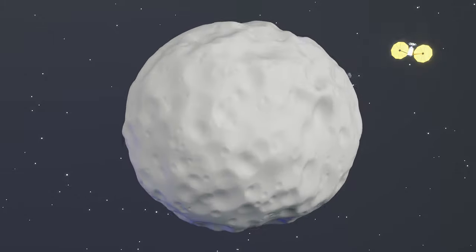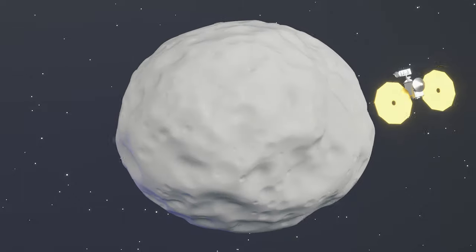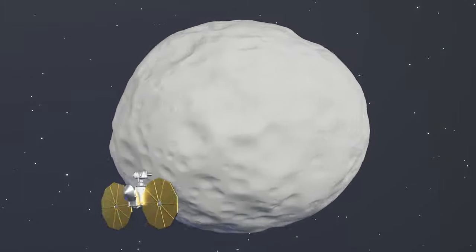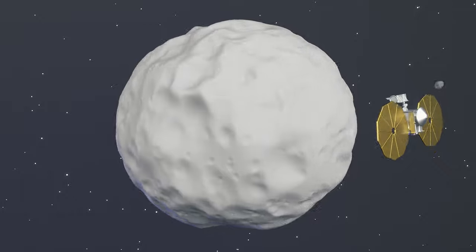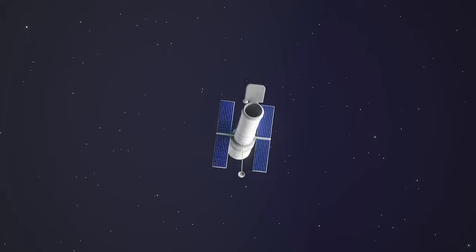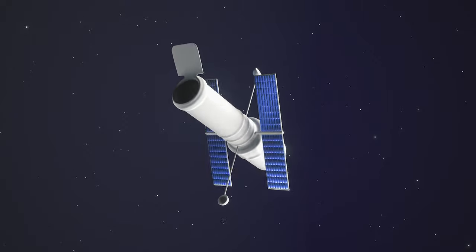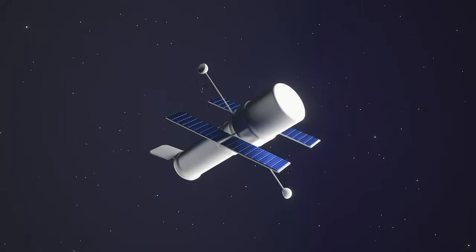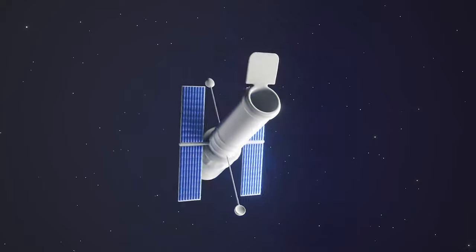Finding these tiny new worlds before Lucy is launched in 2021 means that the team can investigate their orbits and plan for more detailed follow-up observations during flybys. Dr. Keith Knoll and other Lucy science team members have been using the Hubble Space Telescope to search for satellites and rings around Lucy's targets.